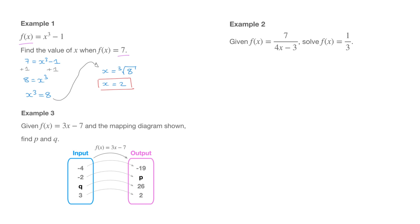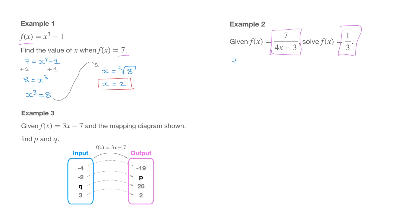Let's look at the second example. We're given f of x which equals 7 over 4x minus 3, and we're asked to solve f of x equals 1 third. The number 1 third corresponds to an output value of this function. When we're asked to solve f of x equals 1 third, it means we need to find the value of x for which this expression equals 1 third — in other words, solve the equation 7 over 4x minus 3 equals 1 over 3.